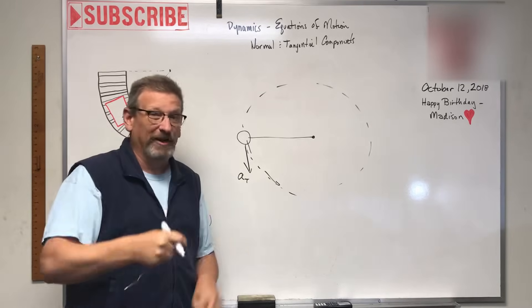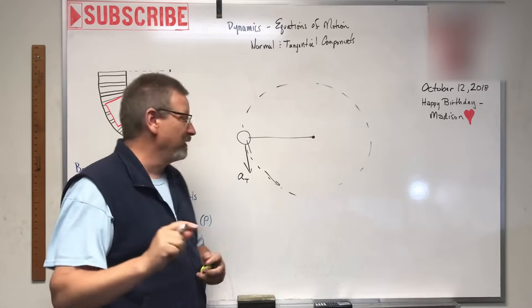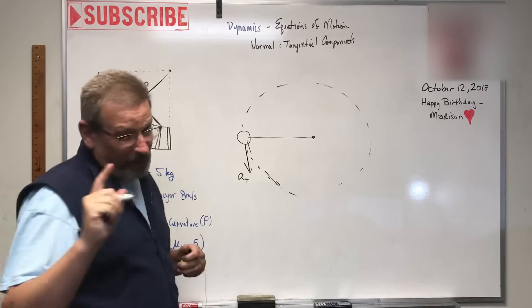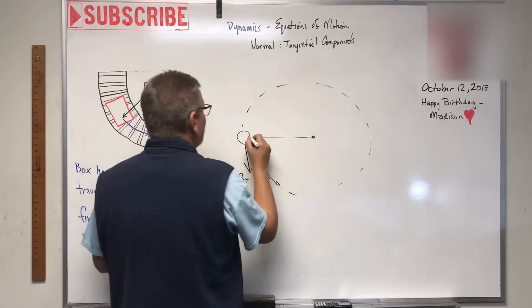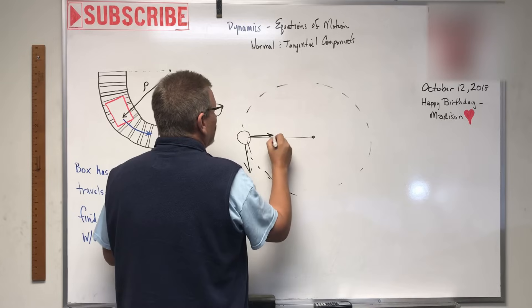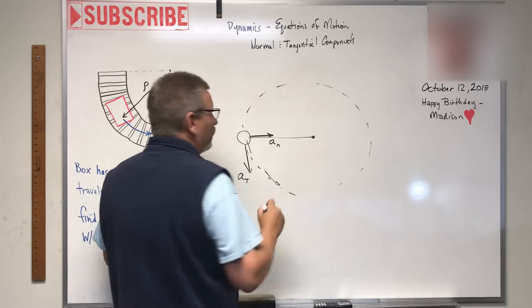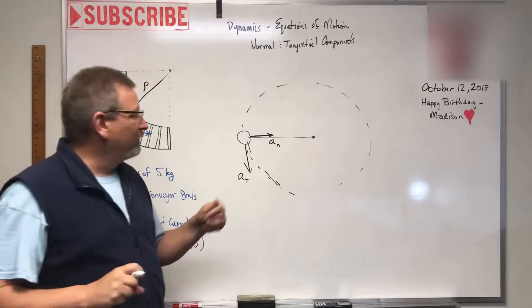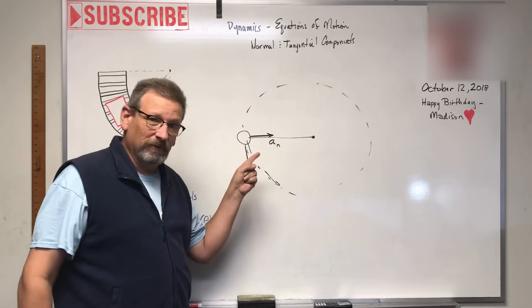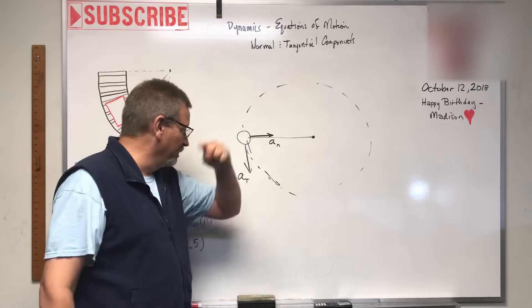But it also has one more acceleration, and that is this guy. We call that a_n for normal. It's also called centripetal, or centripetal if you're from England.